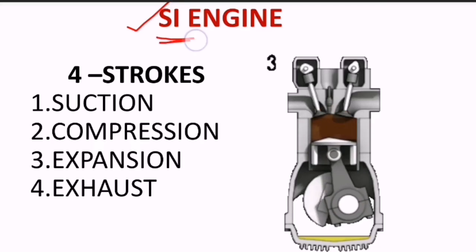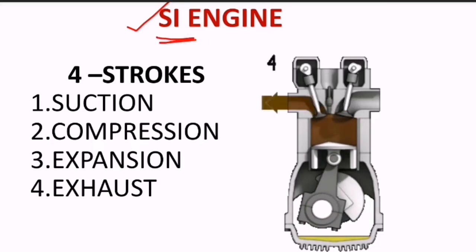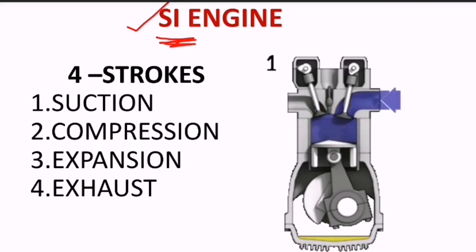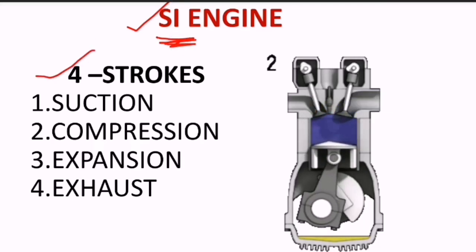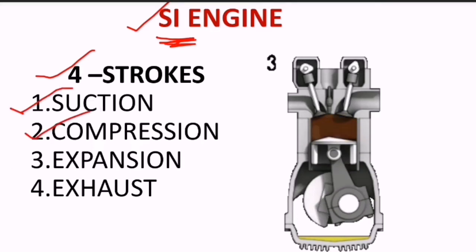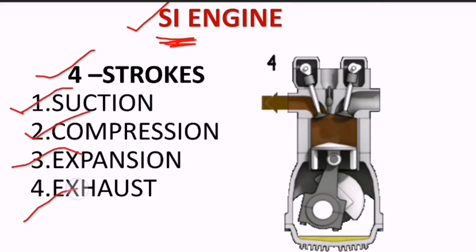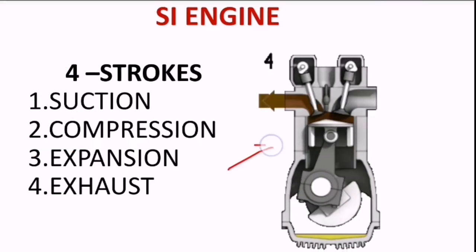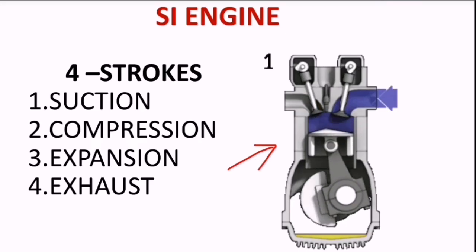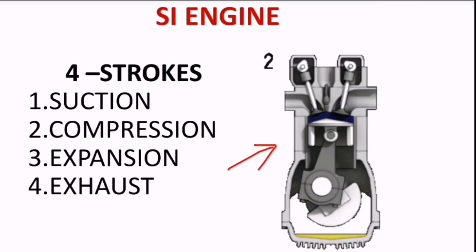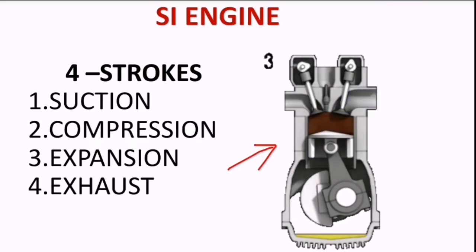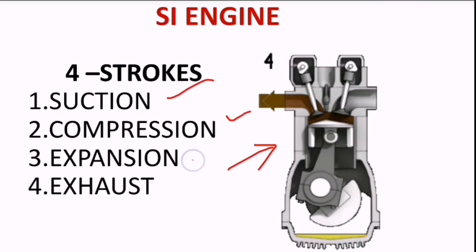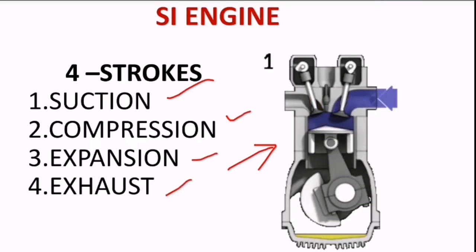SI engine means spark ignition engine, which is nothing but a petrol engine. So 4 strokes are there: suction, compression, expansion, and exhaust. Look at this animation — we can understand clearly what is happening, how the suction stroke is happening, and how compression, expansion, and exhaust strokes are happening.